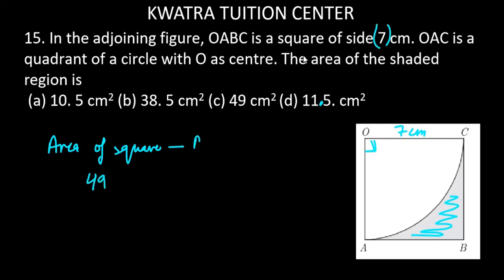49 minus the area of the quadrant. For the quadrant, the angle is 90 degrees divided by 360 times π r squared. π is 22 over 7, r squared.